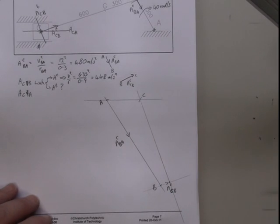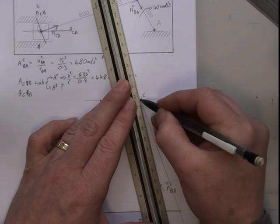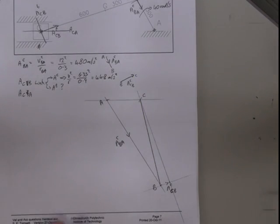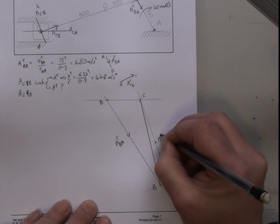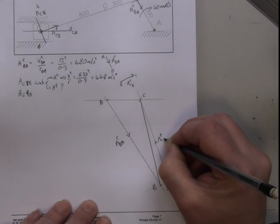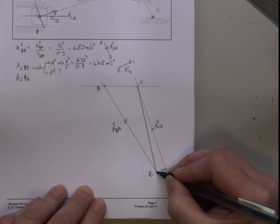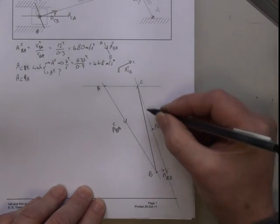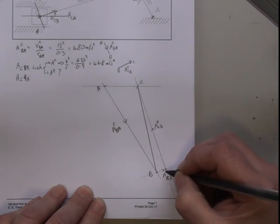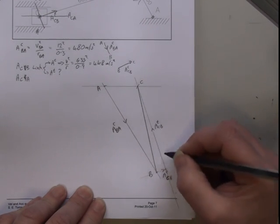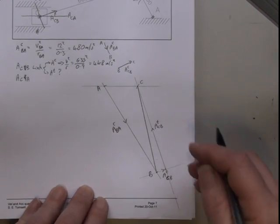So on my diagram, this line is the total acceleration of C relative to B. This one here must be the tangential of CB. Now this point down here isn't actually a real point. I have to add this part of the vector and that part of the vector together to get the total. So this is not a real point on the diagram, so these become light lines or dotted lines. And that's my acceleration diagram.